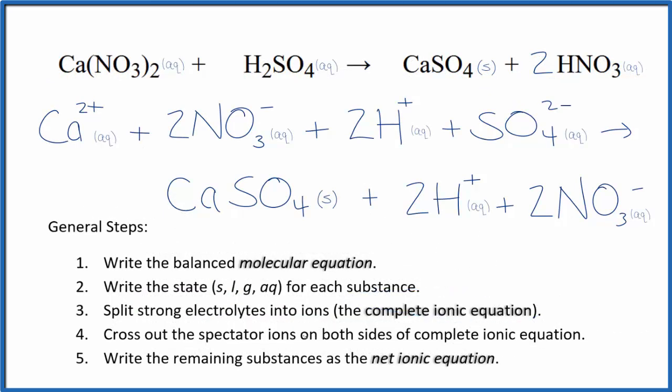Now we can cross out the spectator ions. They're on both sides of the complete ionic equation. So the reactants here on the top, products on the bottom. I can see that I have two nitrate ions right here in the reactants, and again in the products. So these are spectator ions.